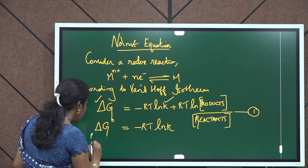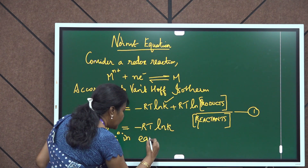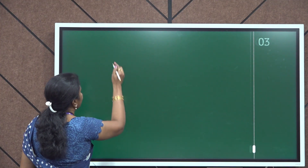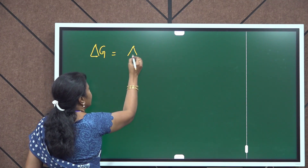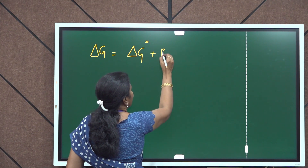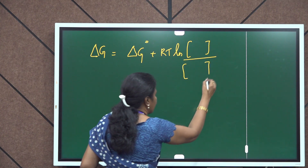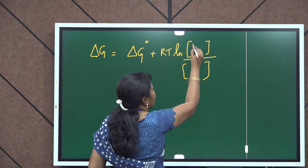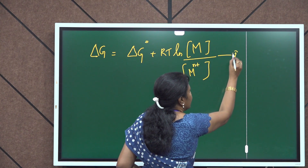Since delta G naught equals minus RT ln K, we can substitute this into equation 1. Substituting for delta G naught in equation 1, we get: delta G = delta G naught + RT ln (products / reactants). In the redox reaction M^(N+) + N electrons → M, on the product side we write: concentration of M divided by concentration of M^(N+). This is assumed as equation number 2.